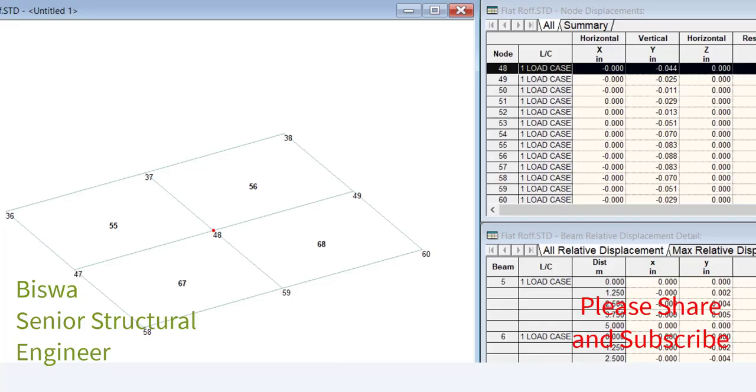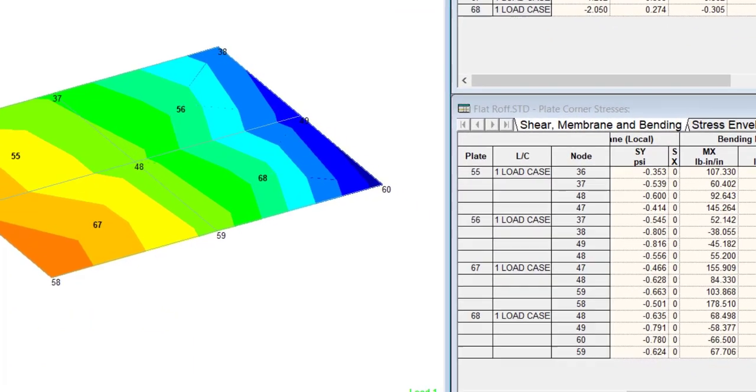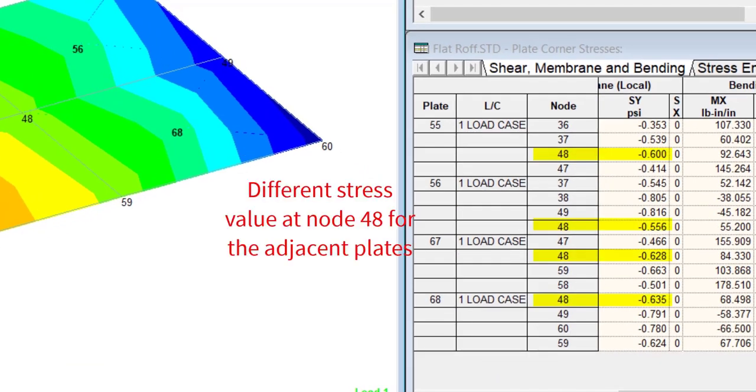Today our discussion is on a very common question we receive from our STAAD users on plate stress analysis results. The question is: after the analysis, if you take a node in the plate mesh, why do we get to see different results, whereas the displacement at the very same node is the same for all the connected plates?